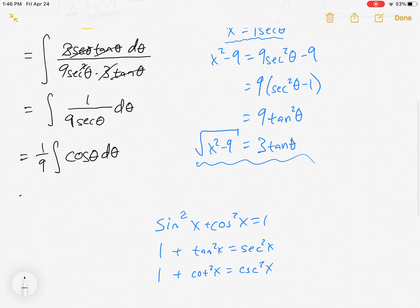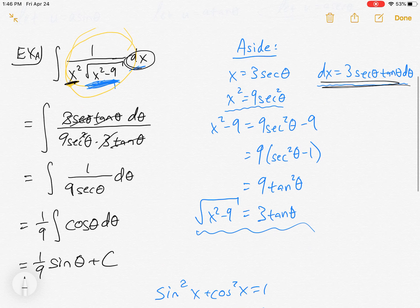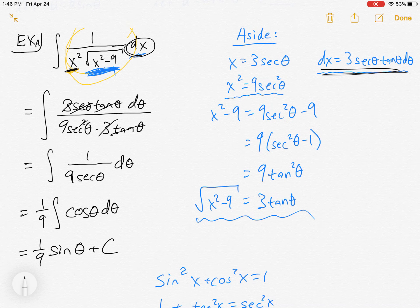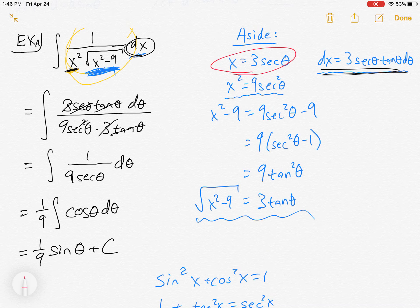The threes cancel, the secants cancel, it's one of the secants cancel, the tangents cancel. So we have remaining only the integral of 1 over 9 secant theta d theta. Do you know that integral? Not off the top of your head maybe, but the 1/9 can come up front. And what's 1 over secant theta? Cosine theta. And now that's something we can integrate. That's 1/9 sine theta plus C.